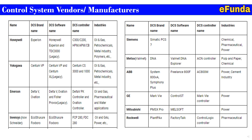The DCS vendors and their brands include: Yokogawa (Centum VP), Emerson (DeltaV, Ovation), Invensys, Schneider (EcoStructure), Foxboro, Siemens (PCS 7), Metso (DNA), ABB (System 800xA), GE (Symphony Plus, Mark V), Mitsubishi (PMSX Pro), Rockwell (PlantPAx). This is how the system vendors and their brands are covered.